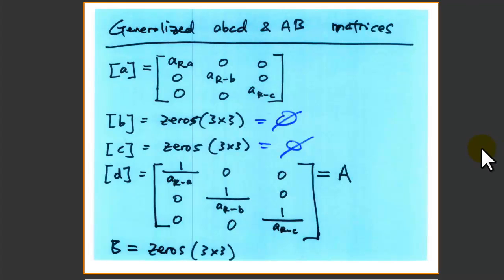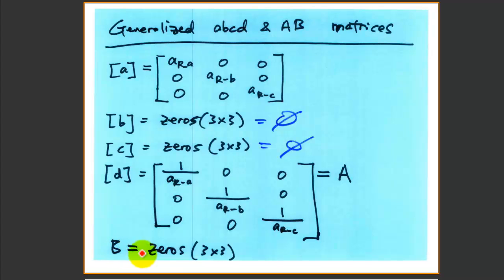To put it in the generalized ABCD and capital AB matrix form, you can simply write it in this form. There is no B, no C, as mentioned. The D can also be the capital A, and the capital B will be zero as well. So you have a three-by-three with three non-zero diagonal values, and two inverse values — capital A and D.